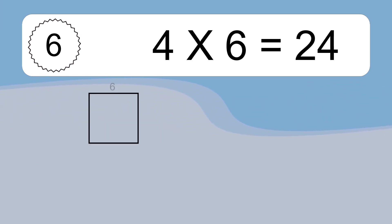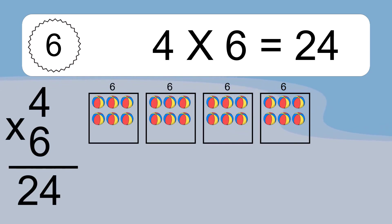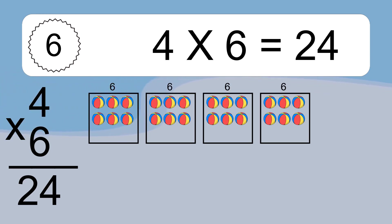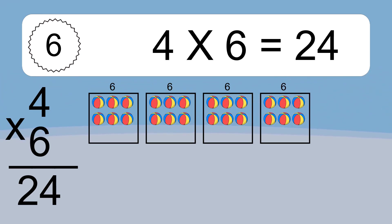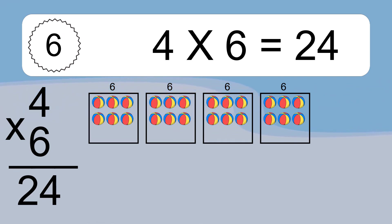4 times 6 equals 24. We have 4 boxes, and each box has 6 colorful balls inside. If you count all the balls in all the boxes together, you will have 4 times 6 balls. This equals 24 balls.